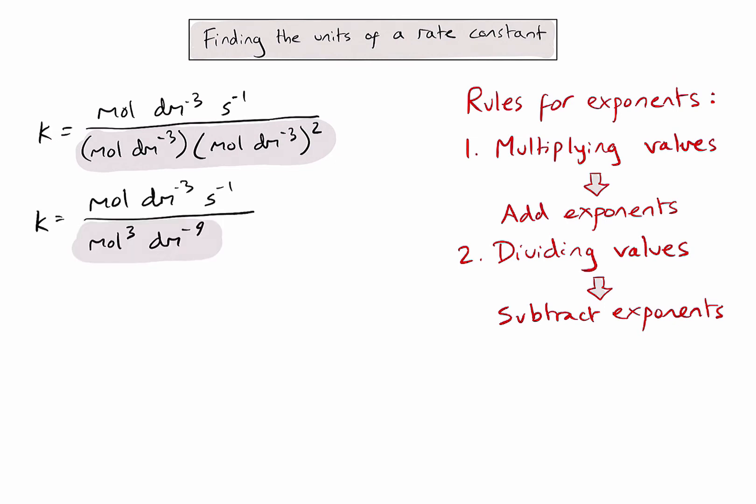Note that for moles, I now have mole to the power of three, because I used mole to the power of one, multiplied by itself three times. And for the decimetres to the minus nine, we've got that by adding together the minus three, minus three and minus three from the previous step.